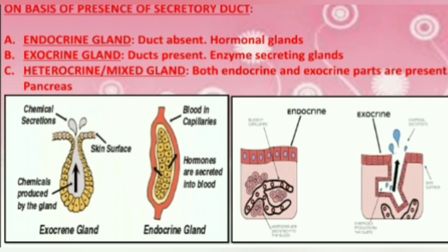On the basis of the presence of a secretory duct, glands can be of three types: endocrine, where the duct is absent; exocrine, where the duct is present; and heterocrine or mixed gland, where both endocrine and exocrine parts are present, like in the pancreas.